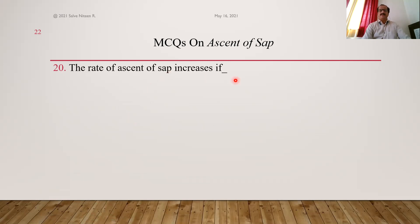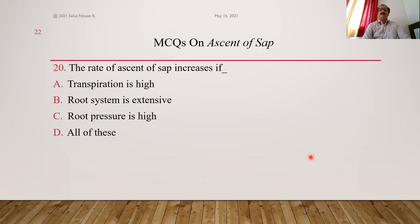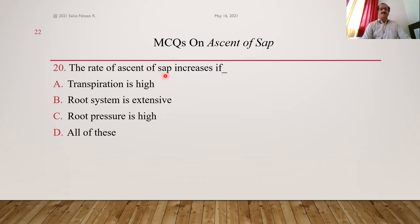Question 20: The rate of ascent of sap increases if — transpiration is high, the root system is extensive, or root pressure is high. If transpiration is high, it drives the transpiration pull that lifts the water column. If the root system is extensive, more water is absorbed, leading to more transpiration and ascent. If root pressure is high, more water accumulates in xylem vessels, increasing the rate of ascent. All three factors increase ascent of sap, so option D — all of these — is the answer.